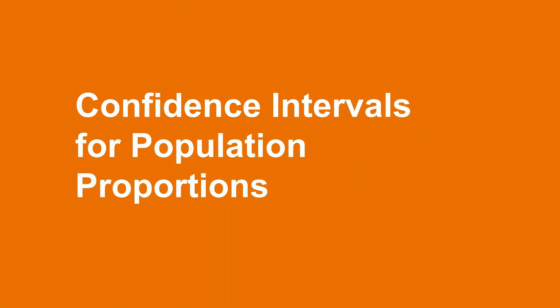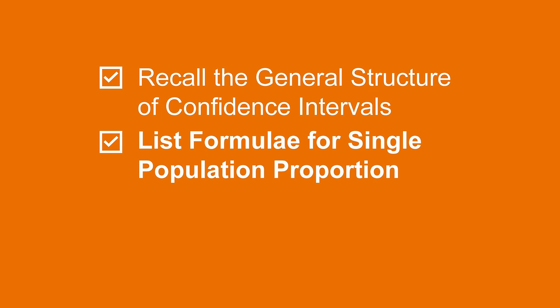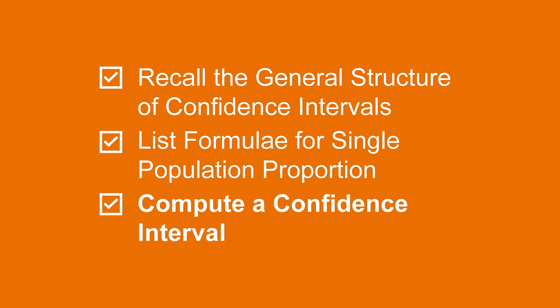Today's topic is calculating confidence intervals for single population proportions. We will start with a quick review on the general structure of a confidence interval. Then we will define and describe the structure of a confidence interval for the particular case of a single population proportion. Finally, once we have the formula for this type of confidence interval, we will compute a confidence interval on an example problem.